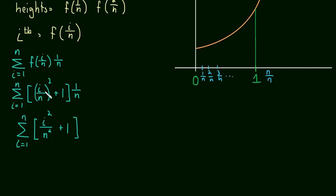So we just square that term out, 1 over n times, or the whole thing times 1 over n. Let's bring that 1 over n inside. So this becomes i squared over n cubed plus 1 over n. Okay,